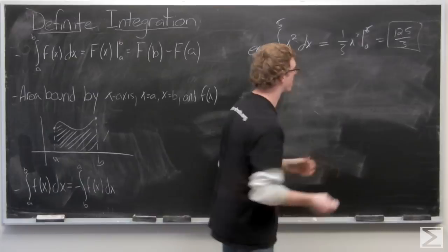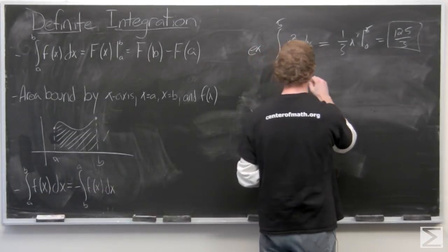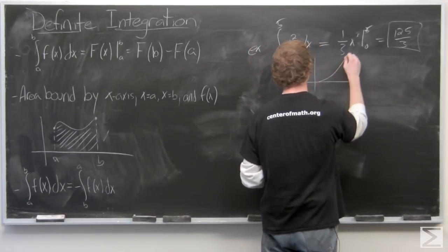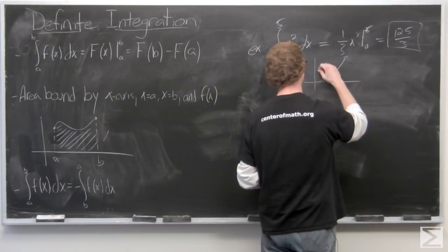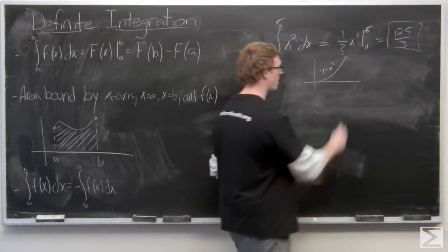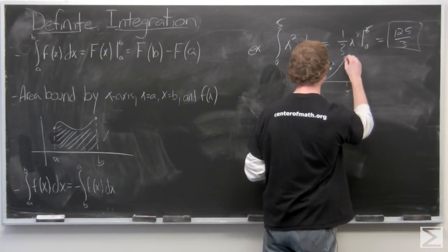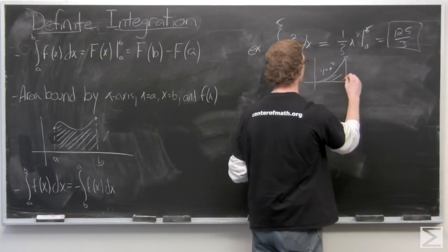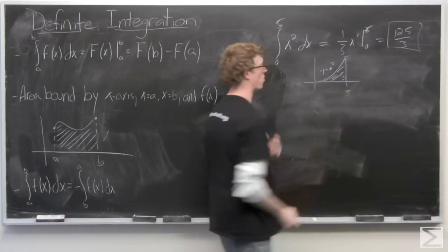And in this case, the corresponding area. If this is the graph of y equals x squared, here's 5. This is the corresponding area.